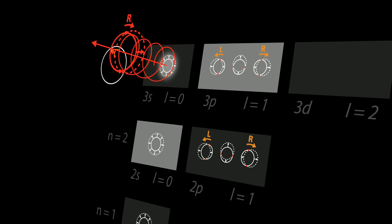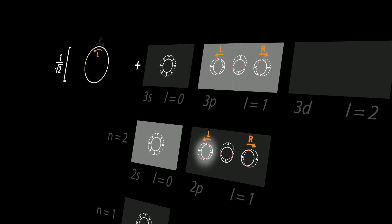If an electron emits a right hand polarized photon, it will get a P orbital rotating anticlockwise. If an electron emits a left hand polarized photon, it will get a P orbital rotating clockwise.